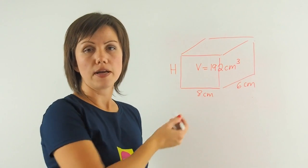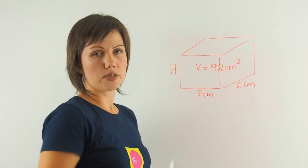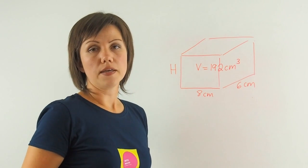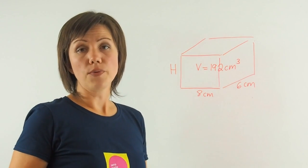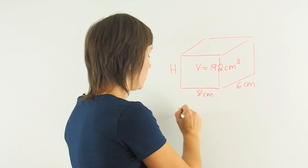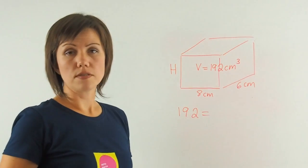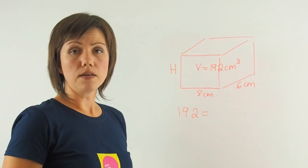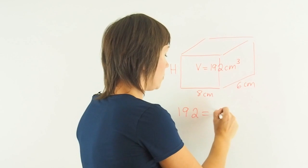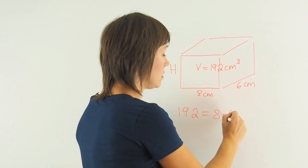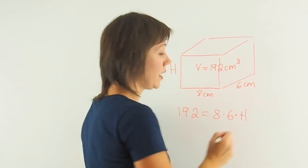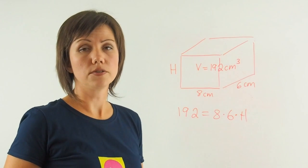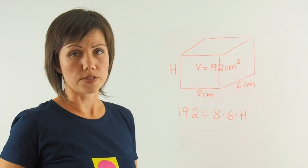In order for us to find the height having all of these other dimensions is to set up an equation. So 192, which is the volume, the total volume of the rectangular prism, is equal to the width times the length times the height. That's the formula to determine the volume of any rectangular prism.